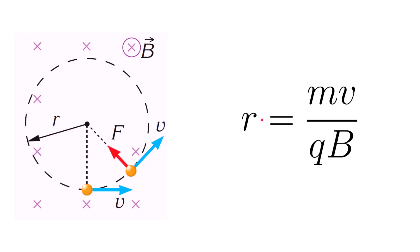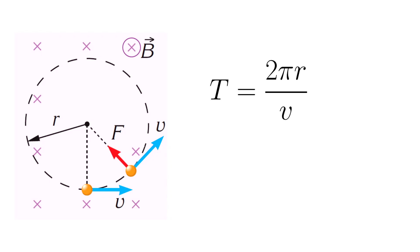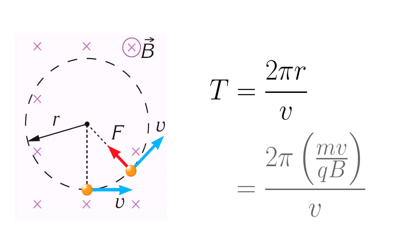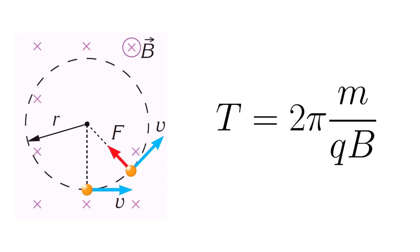We can also find the period of the motion. The period is found by dividing the circumference of the circle by the velocity. By substituting the expression for radius, we get this expression, and the velocities cancel each other, giving us finally the equation for the period of the circular motion.